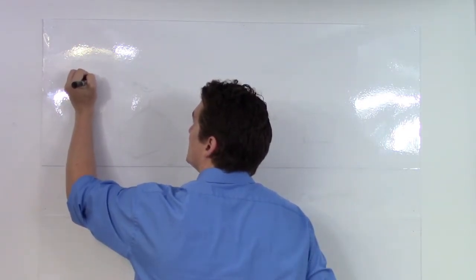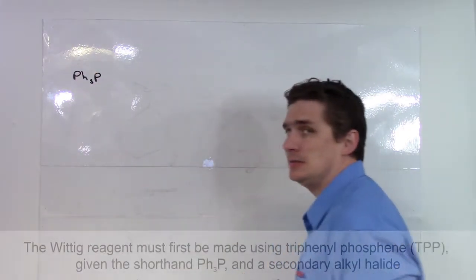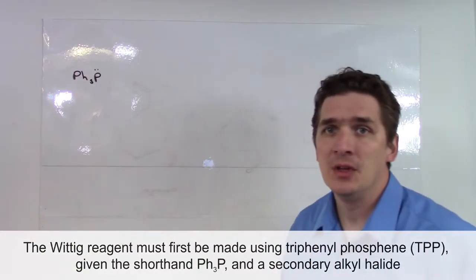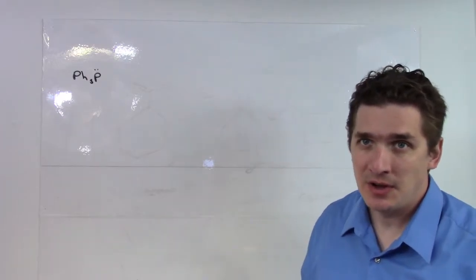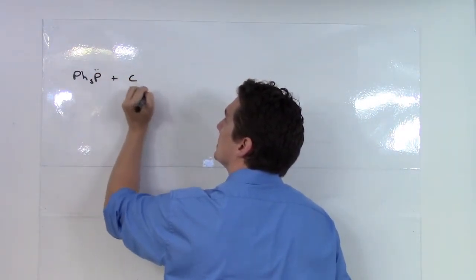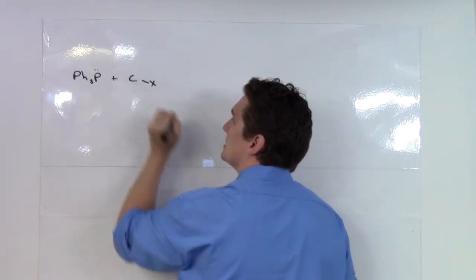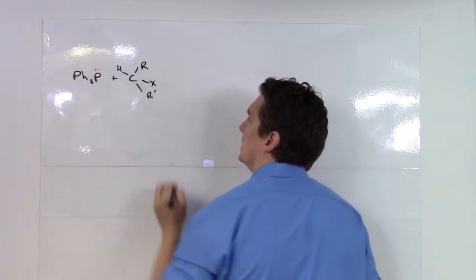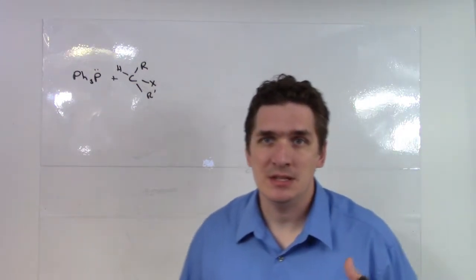So usually substituted as Ph3P. Now, having a lone pair, we're going to take this triphenylphosphate and react it with a carbon that contains halide, two R groups, and a hydrogen. It's going to be important that we meet these conditions.